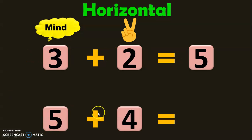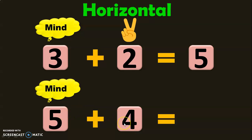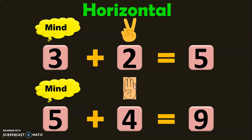Let us do the next example: 5 plus 4. So 5 in the mind and 4 in your fingers. After 5, it will be 6, 7, 8, 9. So the answer is 9. Hope you are able to understand how the mind and fingers calculation is done. Let us do some more examples to understand this concept better.